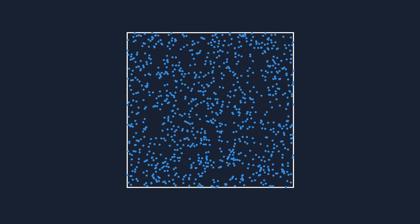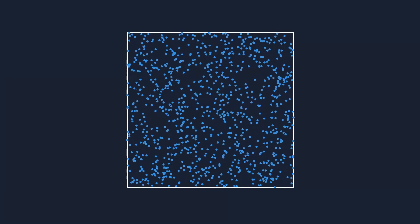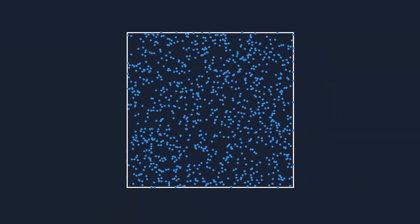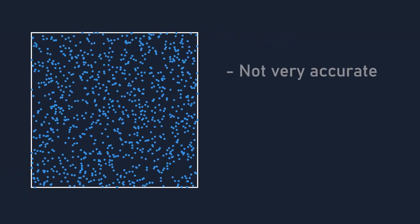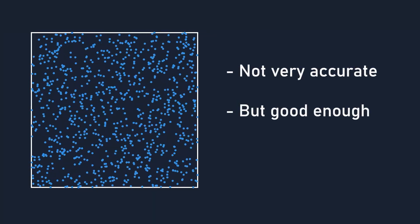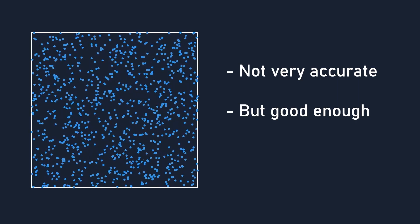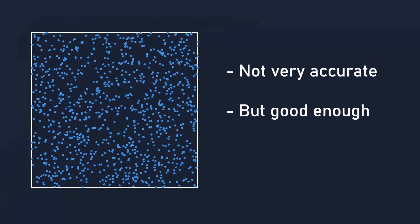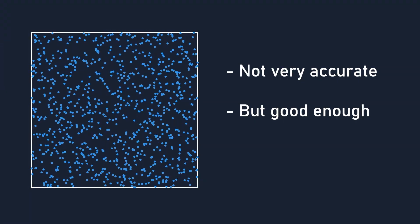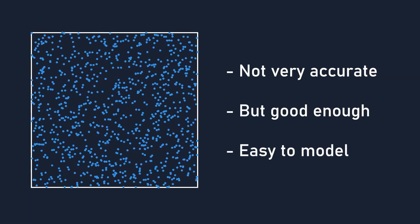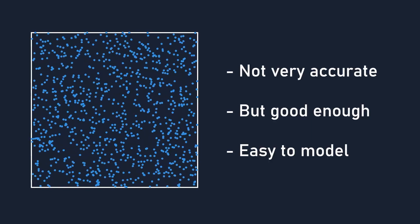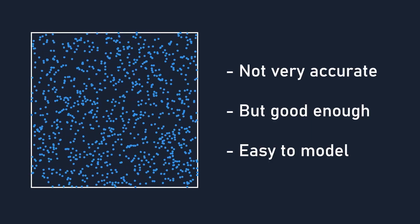To represent a virtual population, let's simulate 1000 dots wandering around in a box aimlessly, representing 1000 people. This is of course not very accurate to real life, but it approximates human behaviour on a larger scale well enough, while providing simplicity which makes it easy to simulate and model.